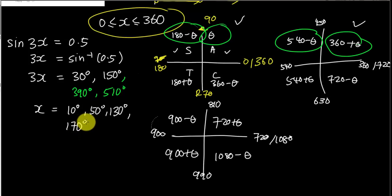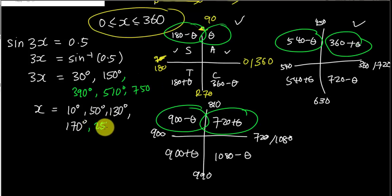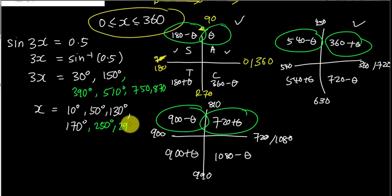If you're not sure whether you need a third round, just try it. For the third round, take 720 plus 30 which is 750, then 750 divided by 3 is 250 — that's still less than 360, so it counts. Then 900 minus 30 is 870, and 870 divided by 3 is 290 — still valid. So I'll stop here since going further would exceed 360.